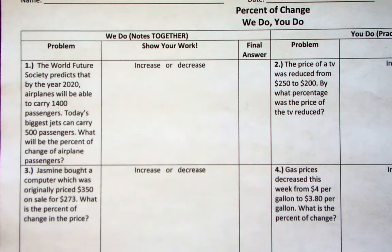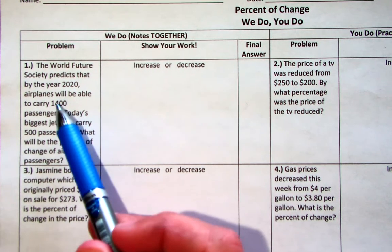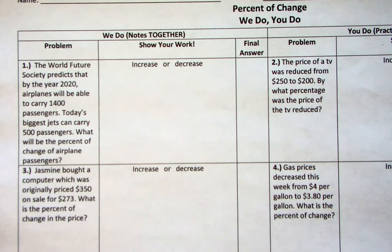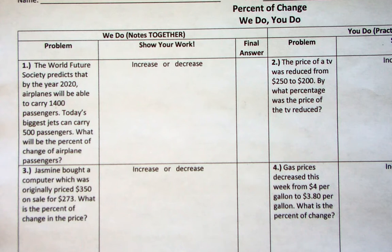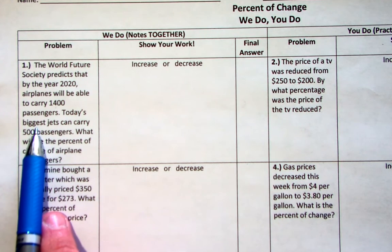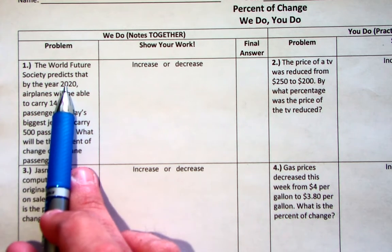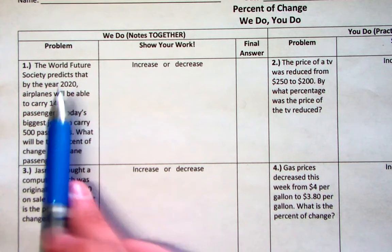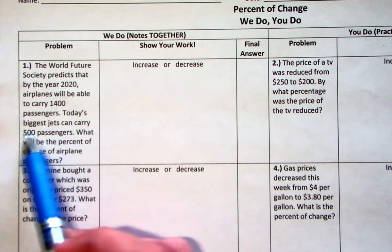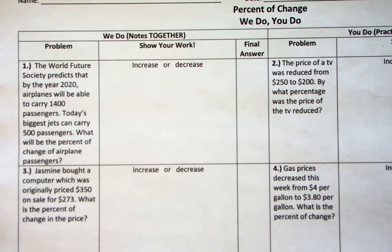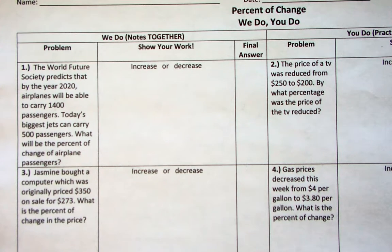I like to start off with: is it an increase or a decrease? Well, some of y'all are going to say, 'To go from 1,400 to 500, that's a decrease.' Well that would be right, except you didn't read the question correctly. Today it can hold up to 500 people — so that's the original. In the year 2020 it can hold up to 1,400 — that's the new. So to go from your original to your new, from 500 to 1,400, was that an increase or a decrease? That's an increase.